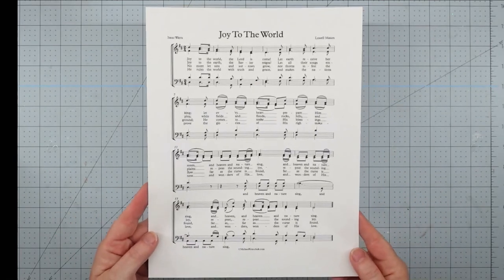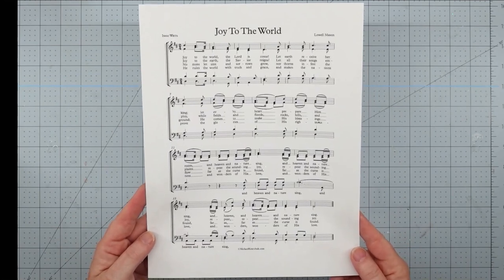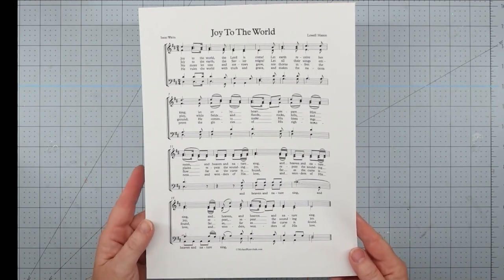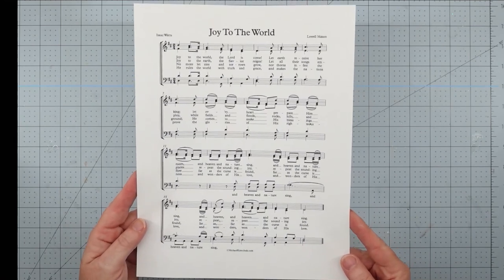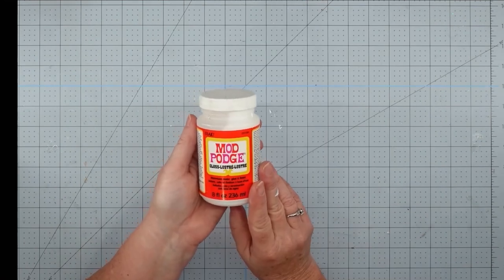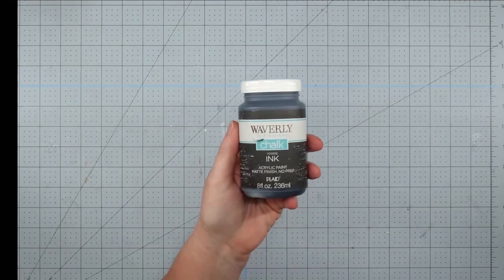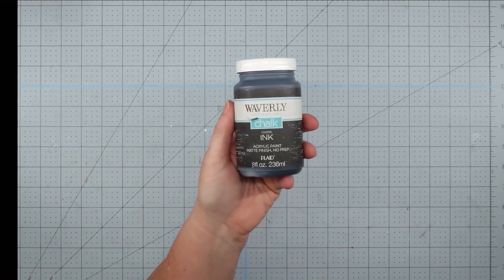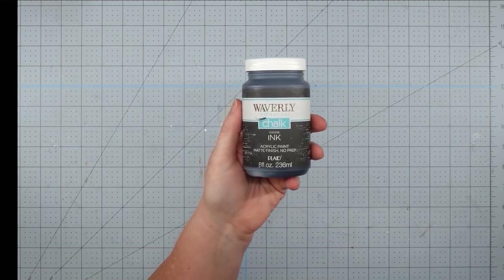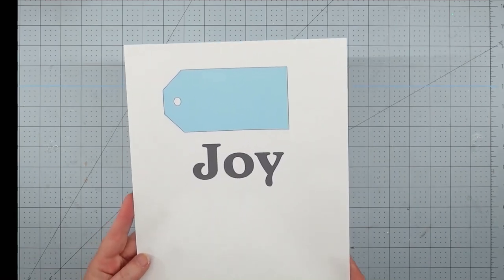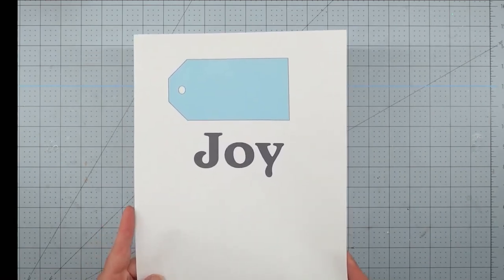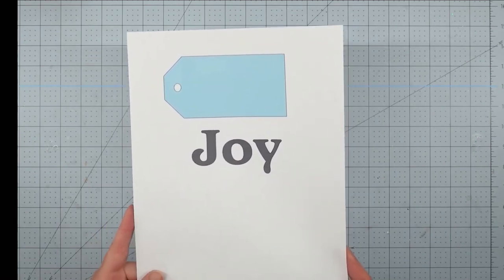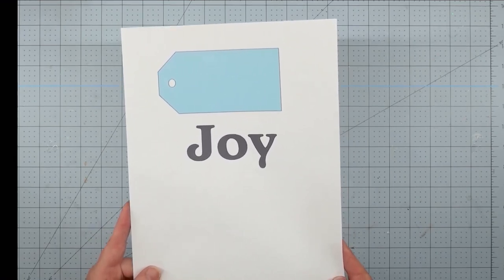Some joy to the world sheet music that I got from Google and printed out. I just Googled sheet music and found several options that I could use. Some Mod Podge, some Waverly chalk paint in ink, and I do also end up using some in white as well. A template of a tag and the word joy that I printed out with my computer. I'll put a link to this below if you'd like to have it.